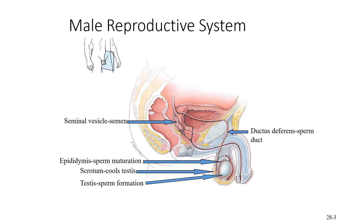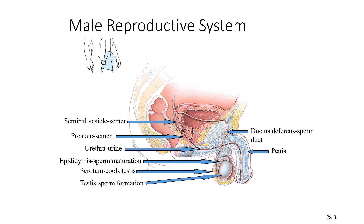The seminal vesicle creates a fluid that will be released within the semen. The prostate gland also plays a large role in creating liquid released within the semen. The penis is where the semen is released from. The urethra serves as the tube through which urine can flow, and it is a common tube for semen to exit from as well.